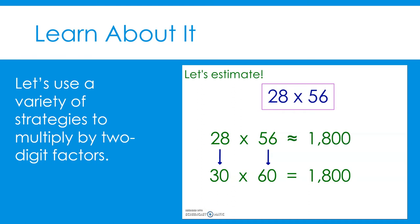That sign means approximately. Because we rounded both 28 and 56 up to the nearest 10, our estimation is an overestimate. The exact answer should be close to, but less than, 1,800.